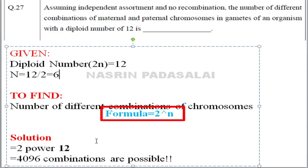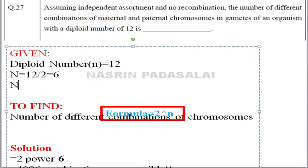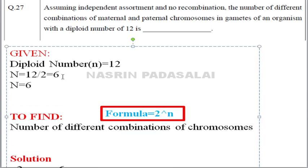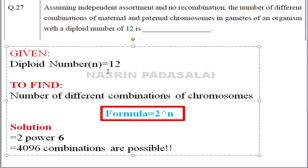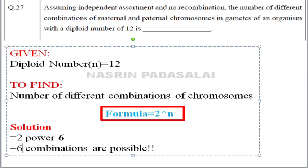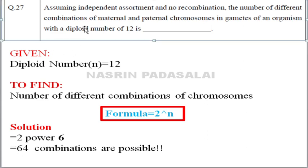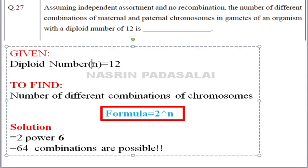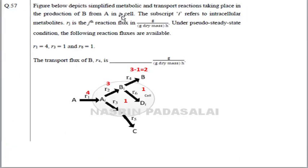Sorry for the confusion. N is the haploid number. Since 2N = 12, N = 6. So the correct calculation is 2⁶ = 64 combinations. Please make sure in the exam whether they give the haploid or diploid number. The formula is 2^N where N is the haploid number of chromosomes. The correct answer is 64.